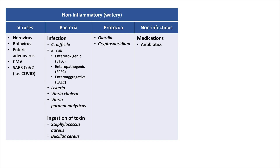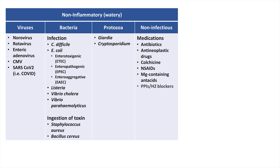Other common drug culprits include anti-neoplastic drugs, colchicine, NSAIDs, magnesium-containing antacids, PPIs and H2 blockers, and the SSRI class of antidepressants. Lastly, psychosocial stressors can also lead to acute diarrhea.